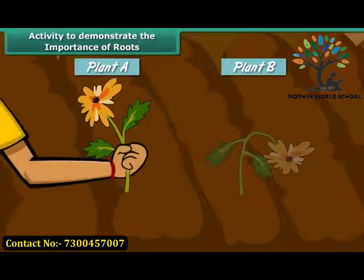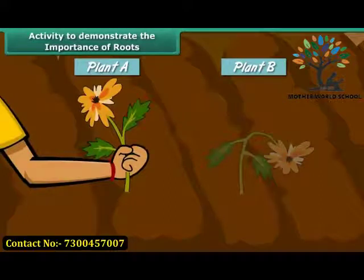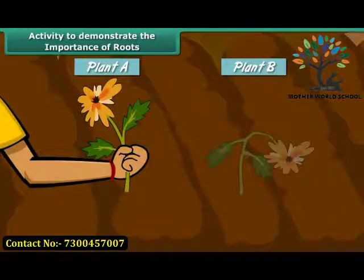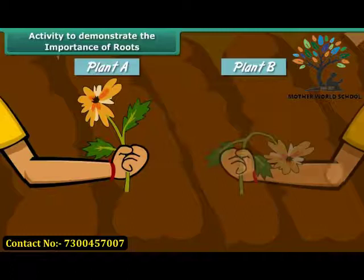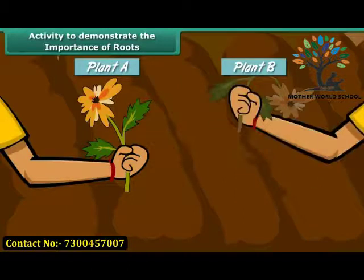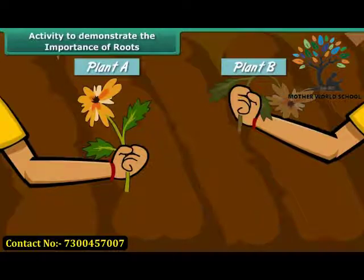Now try pulling the two plants out from the soil. Plant A is firmly attached to the soil because of its roots, so it is difficult to pull it out. However, plant B that has no roots comes out easily. This shows that roots anchor plants firmly in the soil.